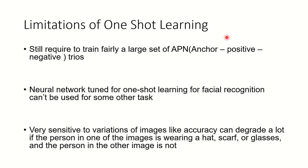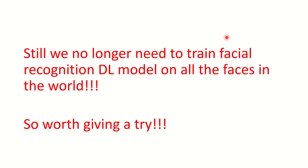What are the limitations? We still need training done for a fairly large set of anchor, positive, and negative trios — comparatively lesser, but still a reasonable amount of work. A neural network tuned for one-shot learning for facial recognition can't be used for any other task; it's very specific. Once you design it for this purpose, that's all it does. It is also very sensitive to variations — for example, if you wear a hat, a scarf, glasses, or if a mustache or French beard suddenly appears, there could be differences, and it still needs a lot of development in that area.